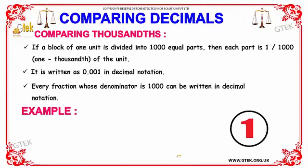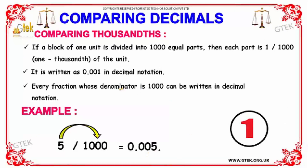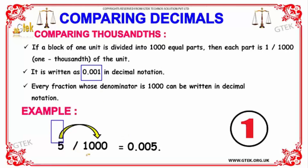Now let's talk about the comparison of thousands. If a block of one unit is divided into 1000 equal parts, then each part is 1/1000 of the unit. For every fraction whose denominator is 1000, it can be written as 0.001.